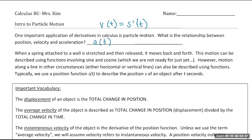Acceleration, A of T, is the derivative of velocity. And relating it back to the position function, acceleration is also the second derivative — S double prime of T. So if given the position function and you want acceleration, take the derivative twice. If given position and you want velocity, take the first derivative. If given velocity, take its derivative to get acceleration.